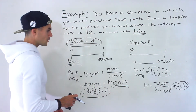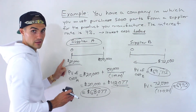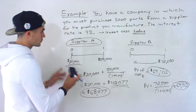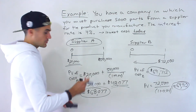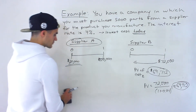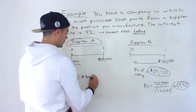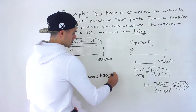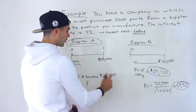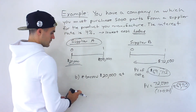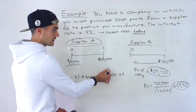Now for part B — what if you don't have the $20,000 today? How would you still go with supplier A? Well, you can borrow $20,000 at 4%, and then pay back the future value of that in one year. If you borrow $20,000 today, you'll have to pay that back in one year as the future value of $20,000.